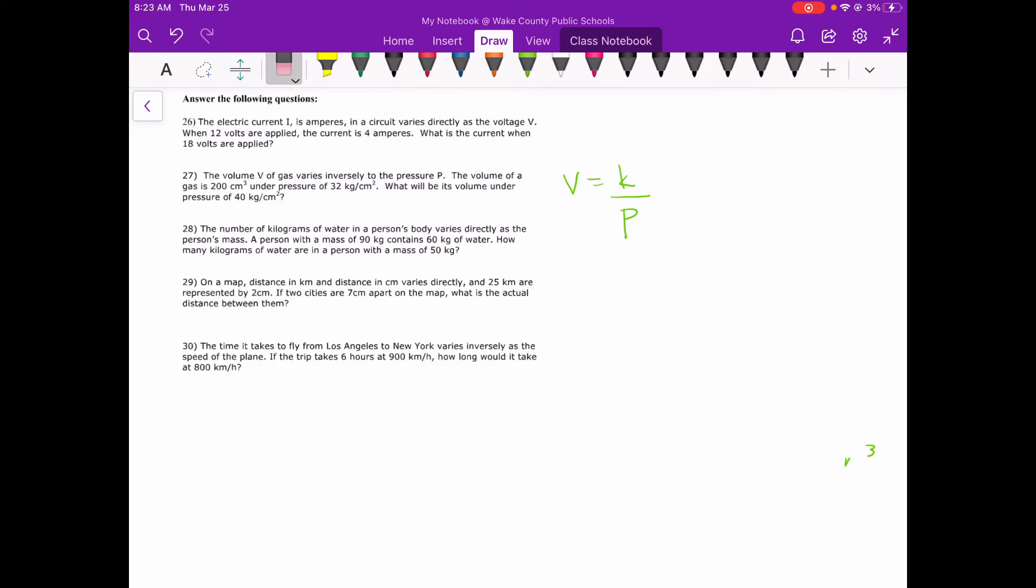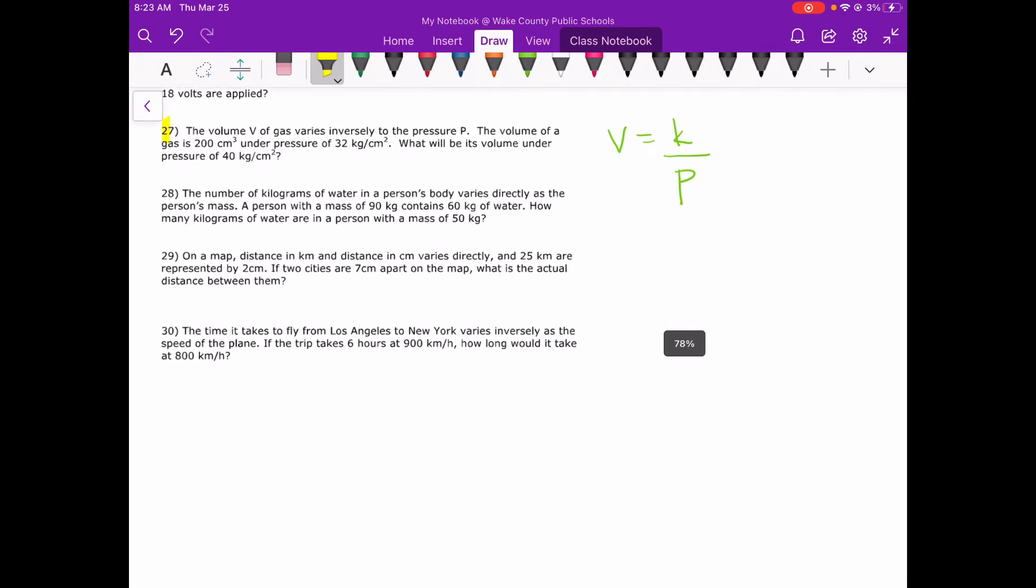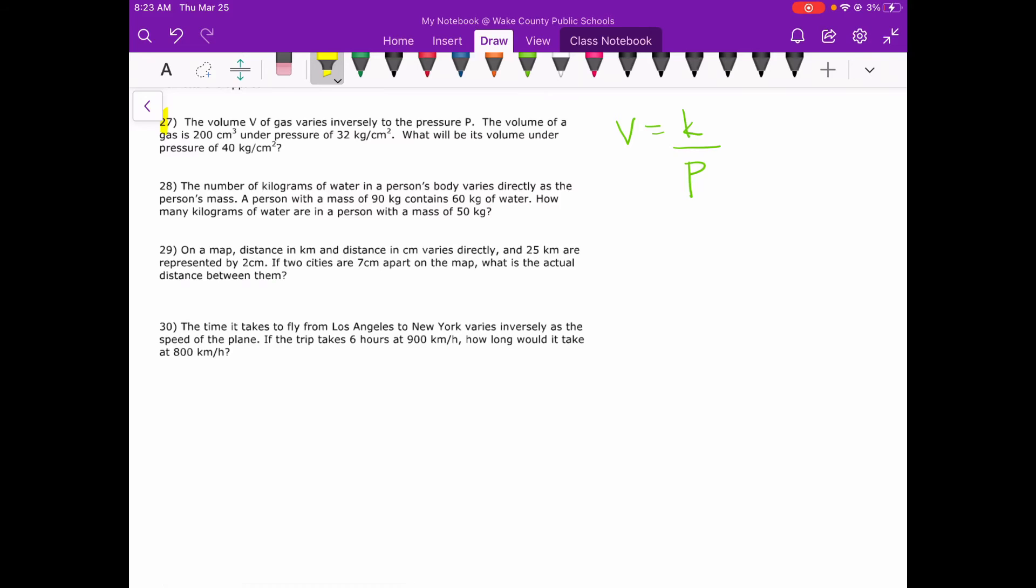So you can see what our answer is supposed to be and then we'll go see if we can get that again. So in this case, in number 27, it says the volume V of gas varies inversely to the pressure P. So instead of Y and X, I've got V and P for volume and pressure.